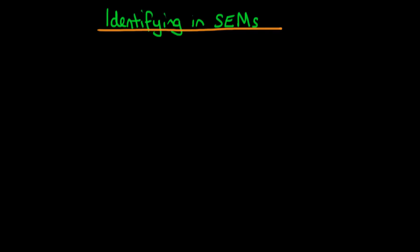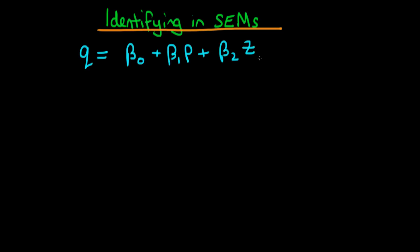In this video I want to talk about the conditions under which we can identify parameters in simultaneous equation frameworks. In the last video we spoke about a system whereby we had a supply equation: Q, the quantity supplied, was equal to beta naught plus beta 1 times the price plus beta 2 times an exogenous variable z1, plus some exogenous error term epsilon 1.